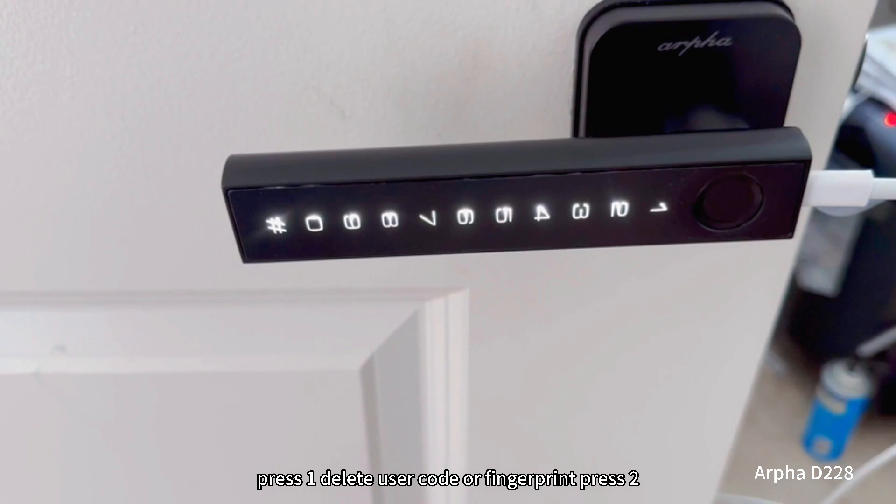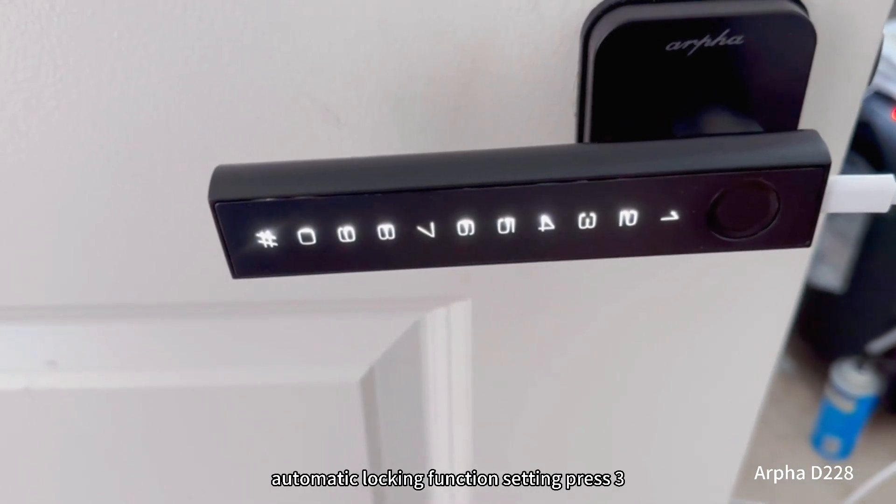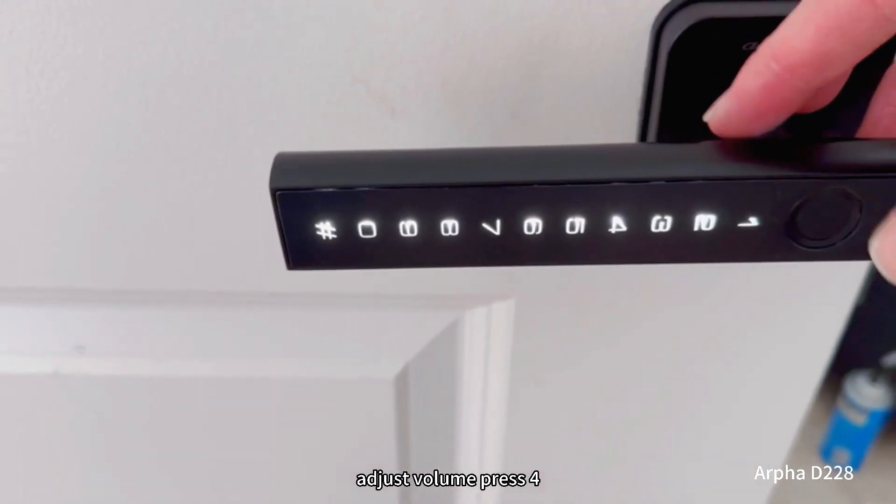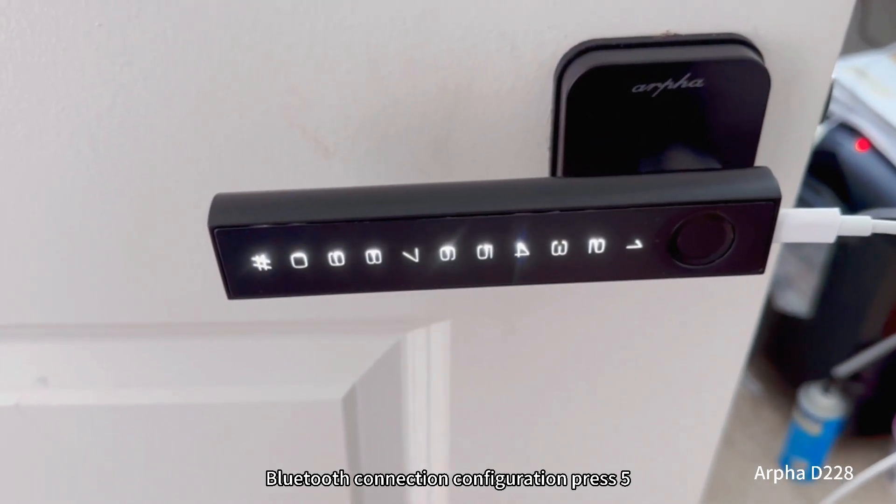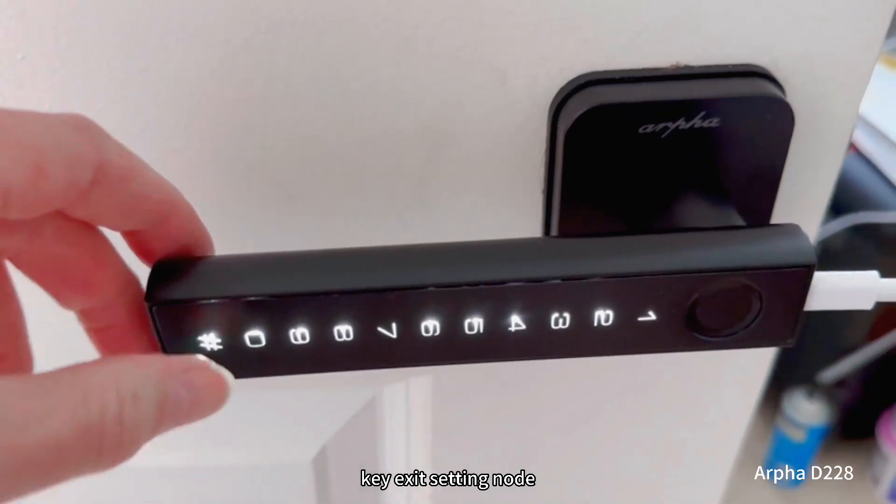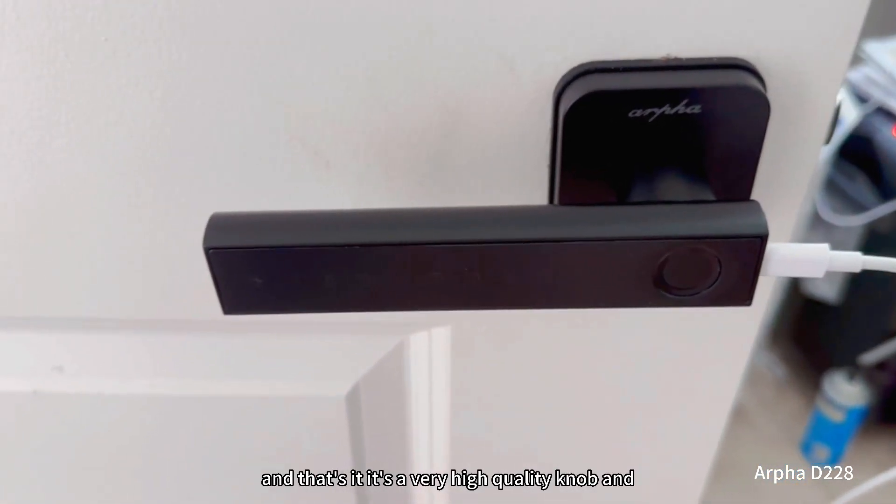Delete user code or fingerprint, press 2. Automatic locking function setting, press 3. Adjust volume, press 4. Bluetooth connection configuration, press 5. Exit setting mode, press pound key. Exit setting mode. And that's it.